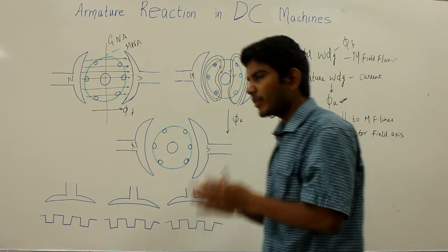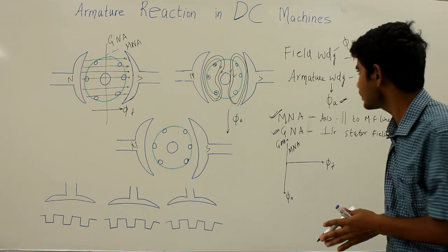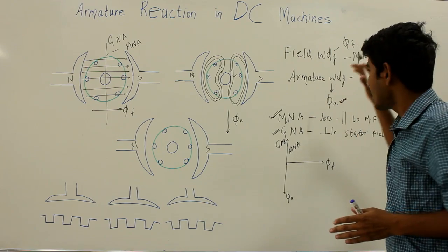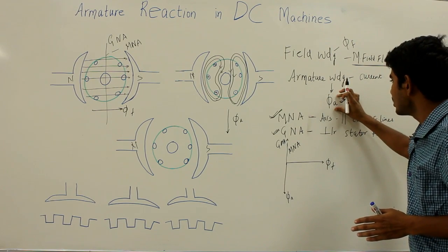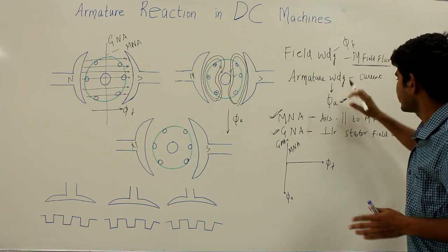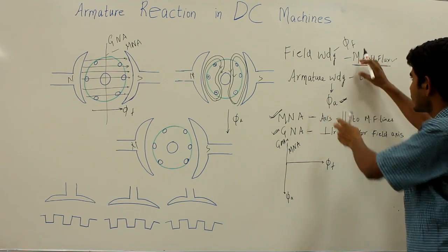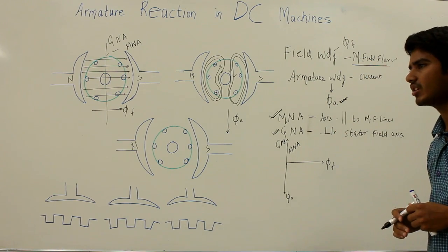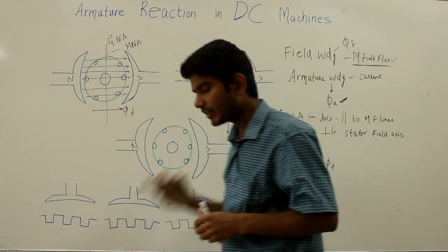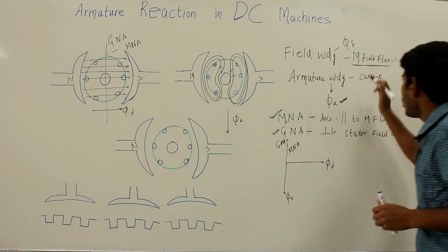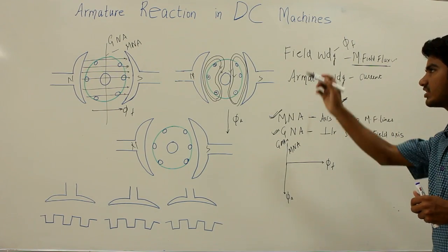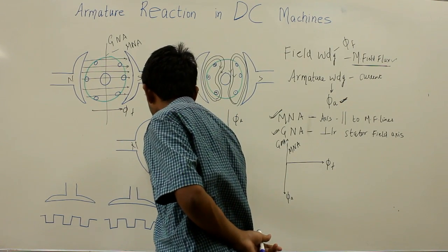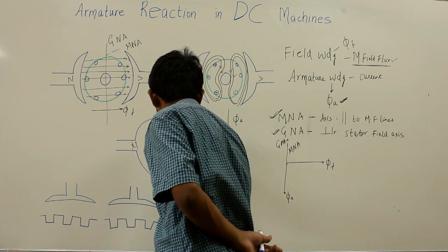The armature flux superimposes with the main field flux and disturbs it. That effect of the armature flux disturbing the main field flux is known as armature reaction. In one line, the effect of armature flux on the main field flux can be stated as armature reaction.